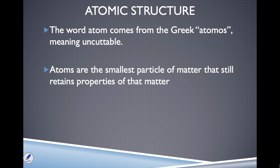The word atom itself comes from a Greek word that means uncuttable. Atoms are the smallest particle of matter that still retain properties of that matter. For example, if we're talking about gold, an atom of gold is the smallest piece of gold that will retain all the properties of gold — how shiny it is, how malleable it is, that it conducts electricity, the color of gold.